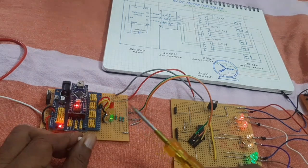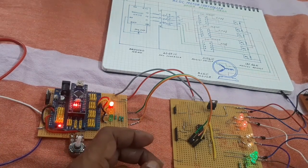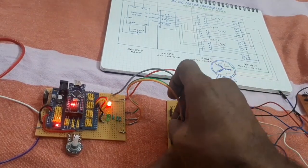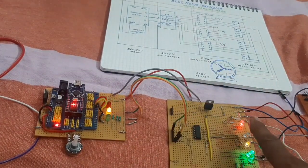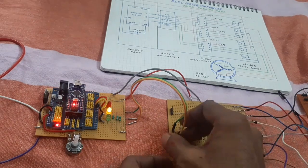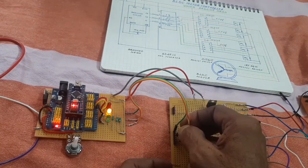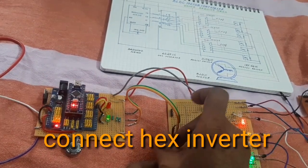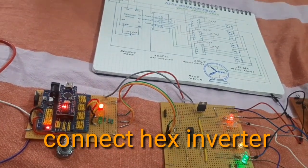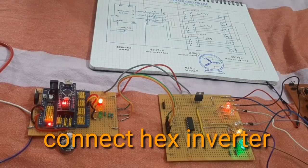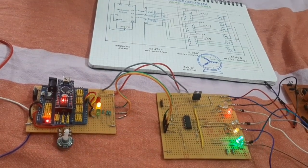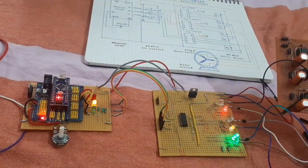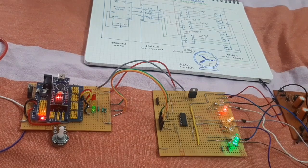Here the three-phase signal is given to the MOSFET drive. Here look at this. Here the signal is converted to high-low. Here the six output signal is given to the MOSFET driver and then given to the motor.